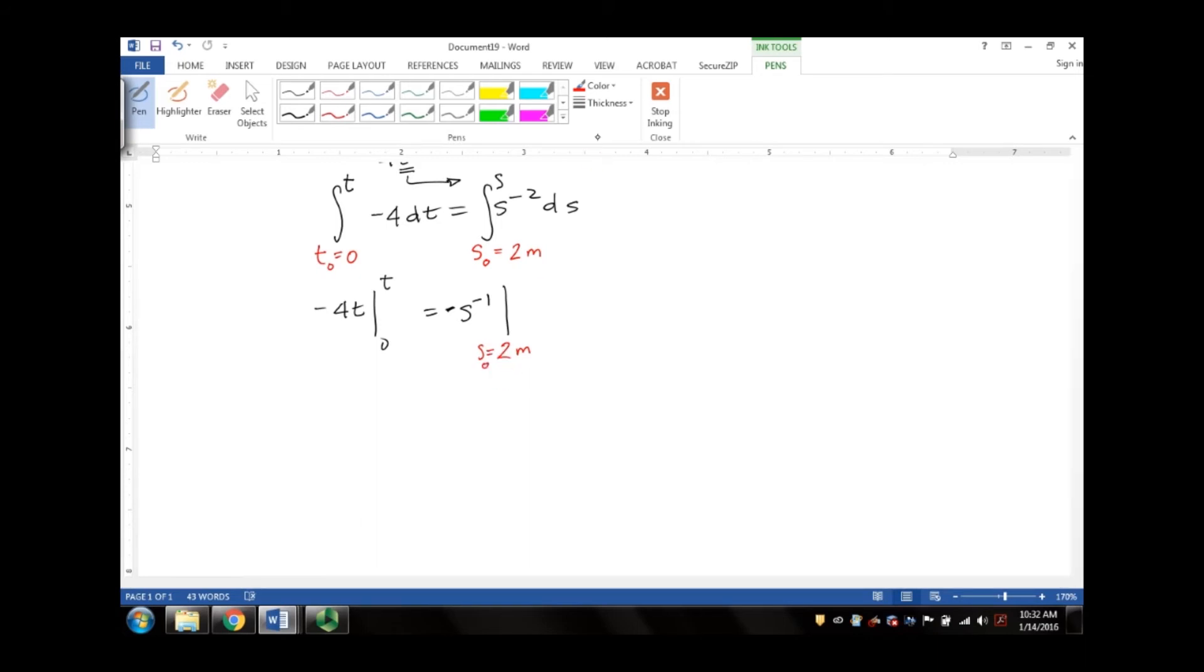s₀ equals 2 meters to some generic variable s. So we get negative 4t minus 0 equals negative s⁻¹ minus negative 2⁻¹. Let's simplify this further. We get negative 4t equals negative s⁻¹ plus one half.